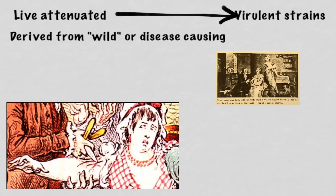Prior to the smallpox vaccine, the process of variolation or inoculation was when we would take live smallpox from a pustule of an uninfected person who had a relatively mild case of smallpox — hopefully — and then place it in the open wound of a healthy person. Historical records indicate that the person would become ill seven to eight days later and then often would recover from a much less severe case of smallpox, or at least that was the theory. However, the practice was not 100%, and many people died, but it was kind of an early form of live vaccination.